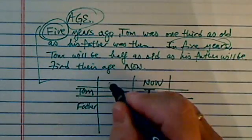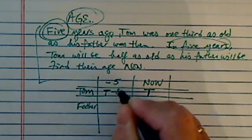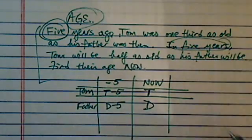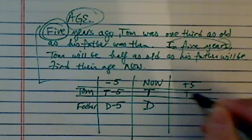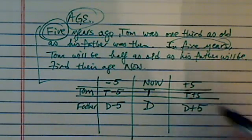Five years ago, you have to do minus five, so it's T minus five. That is also D minus five. Five years from now, it's plus five. So it's T plus five, and D plus five.